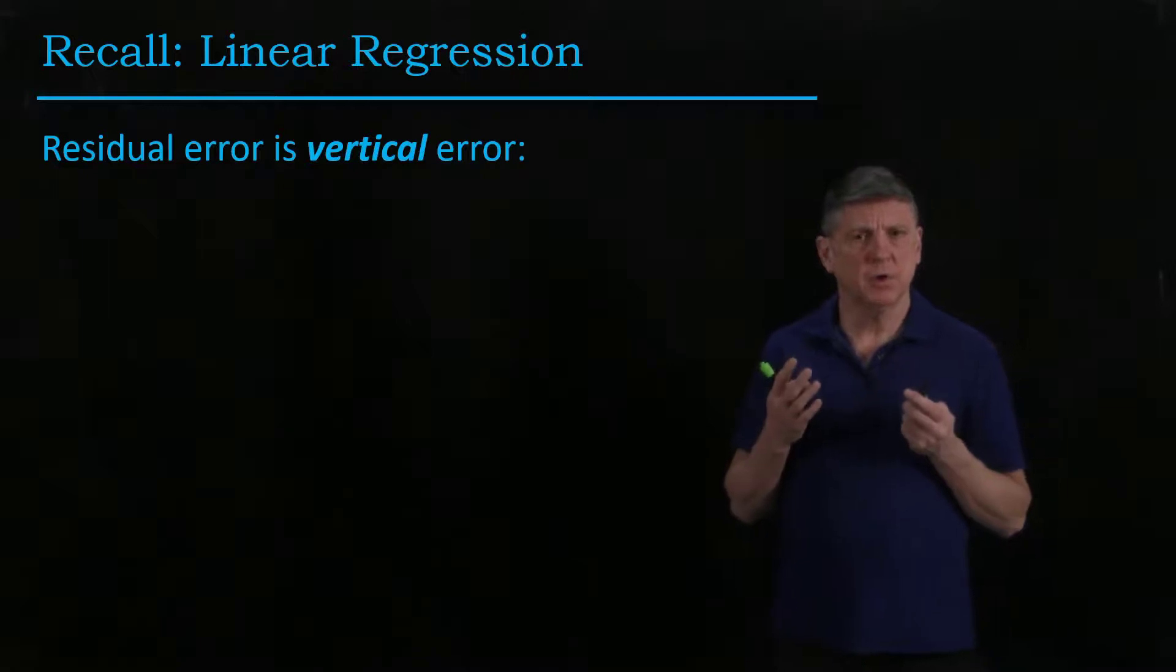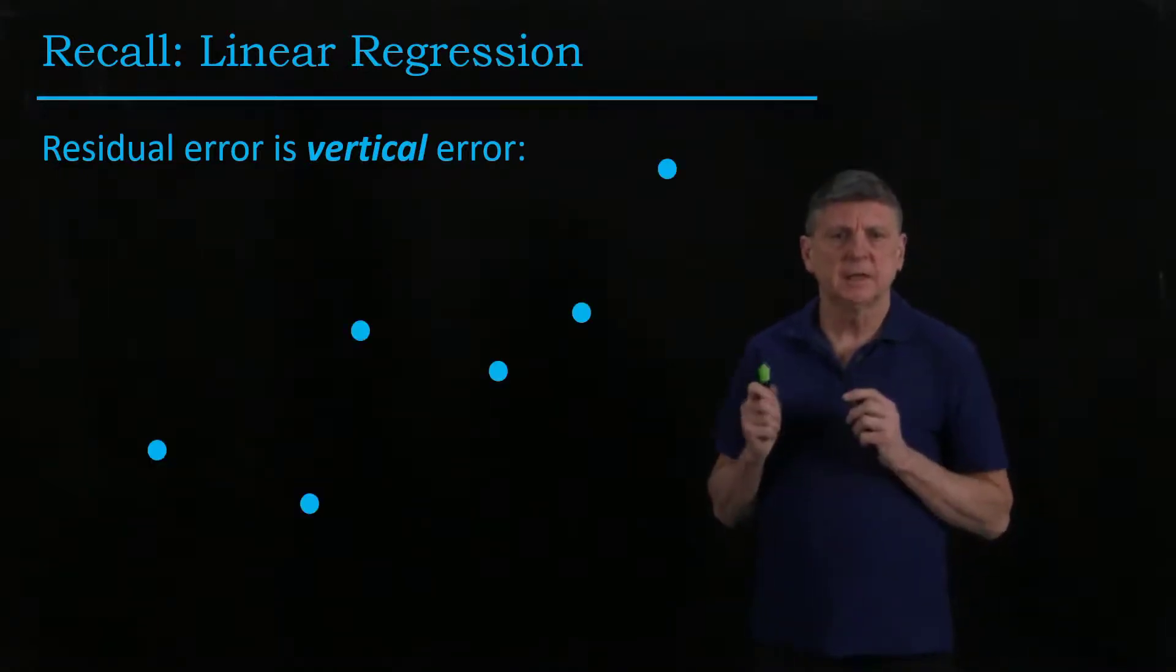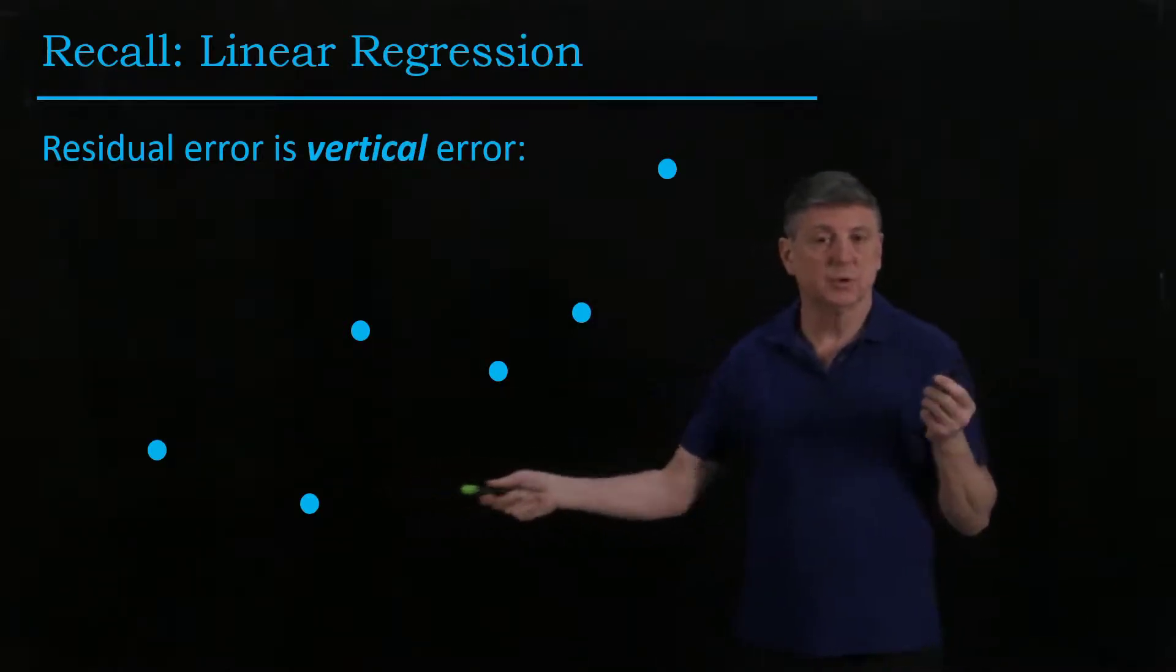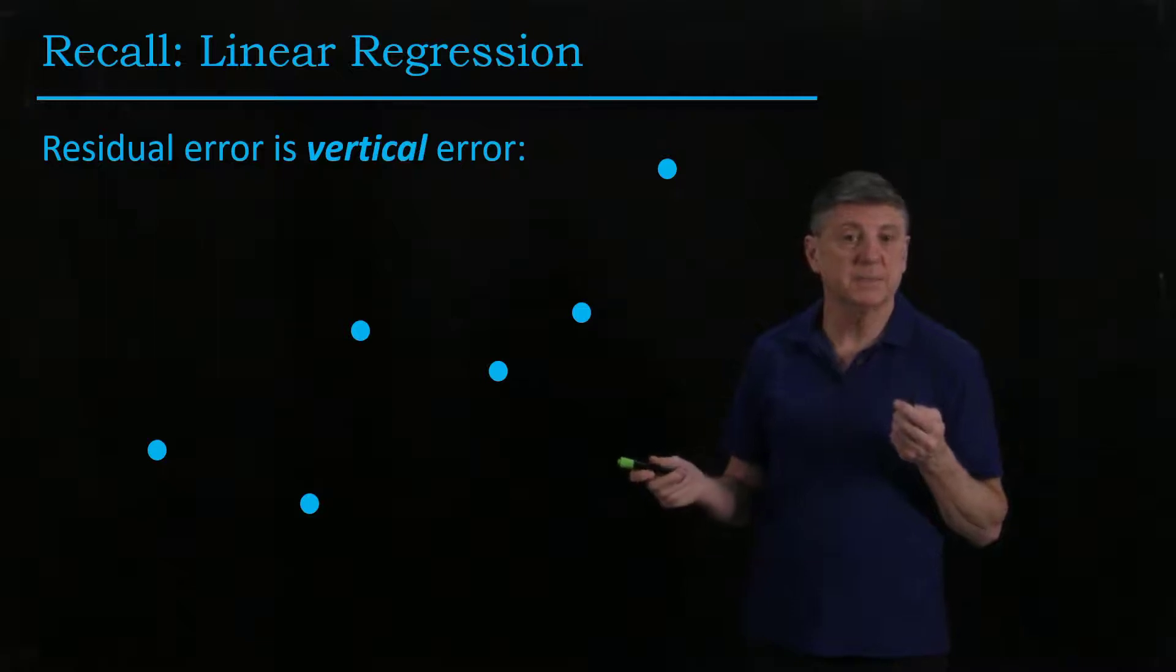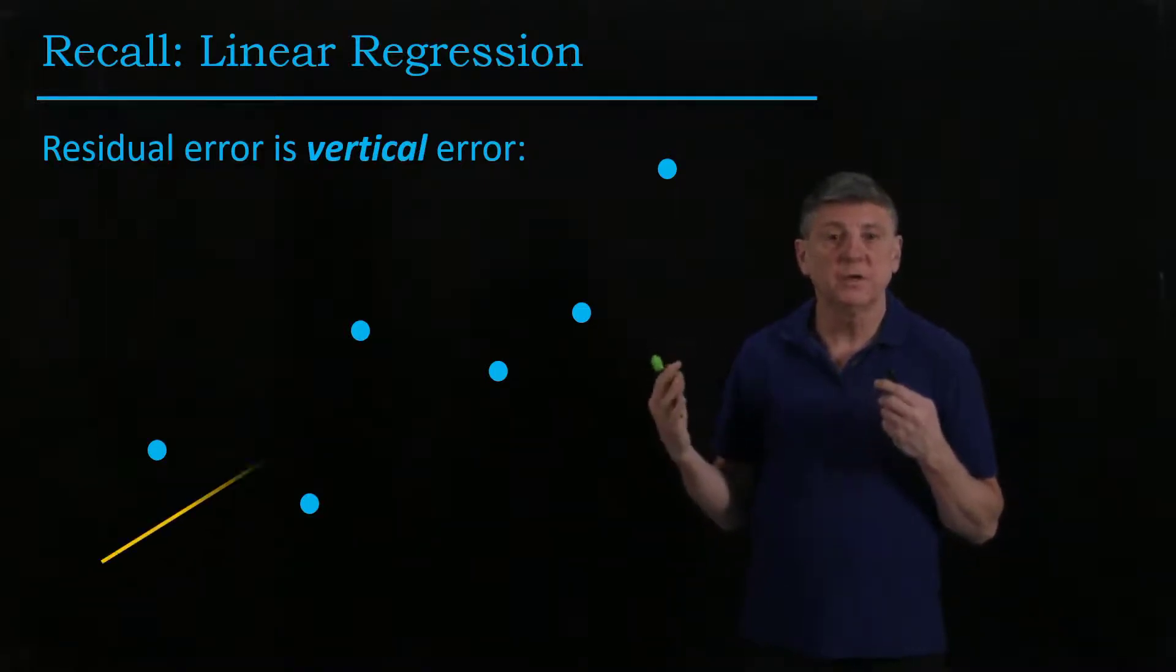Now let's recall linear regression and compare this to PCA. In linear regression we were given some data, where the horizontal axis is our independent variable and the vertical axis is our dependent variable. When we do that regression,